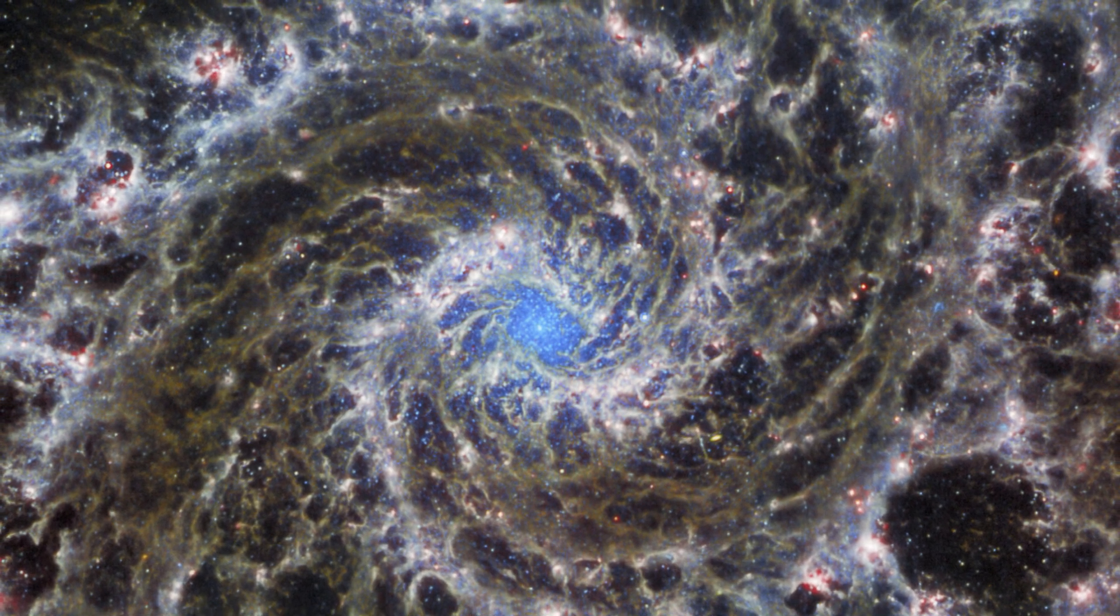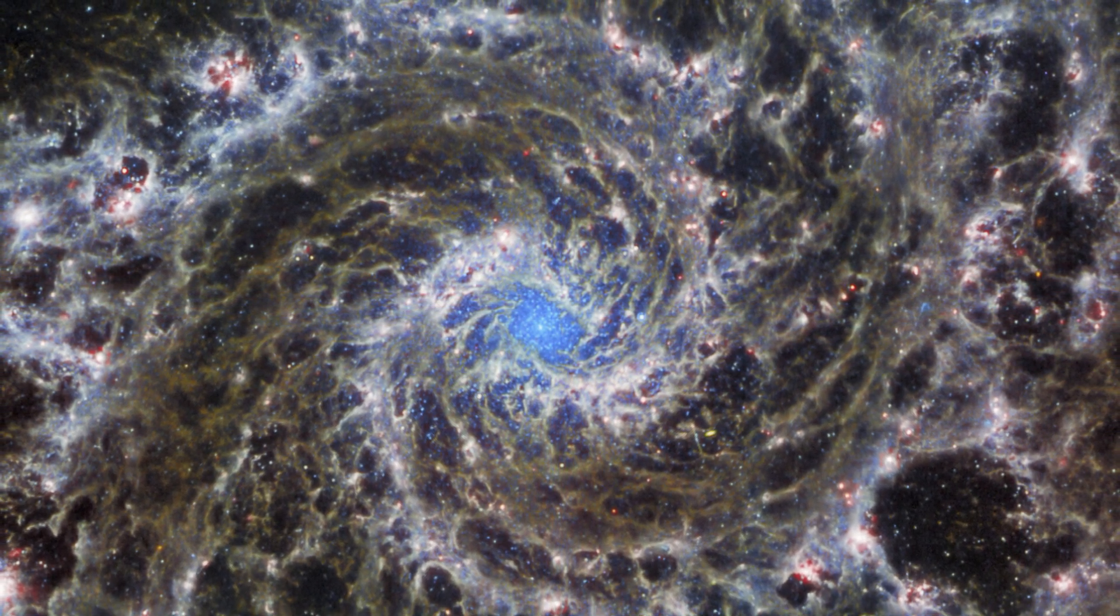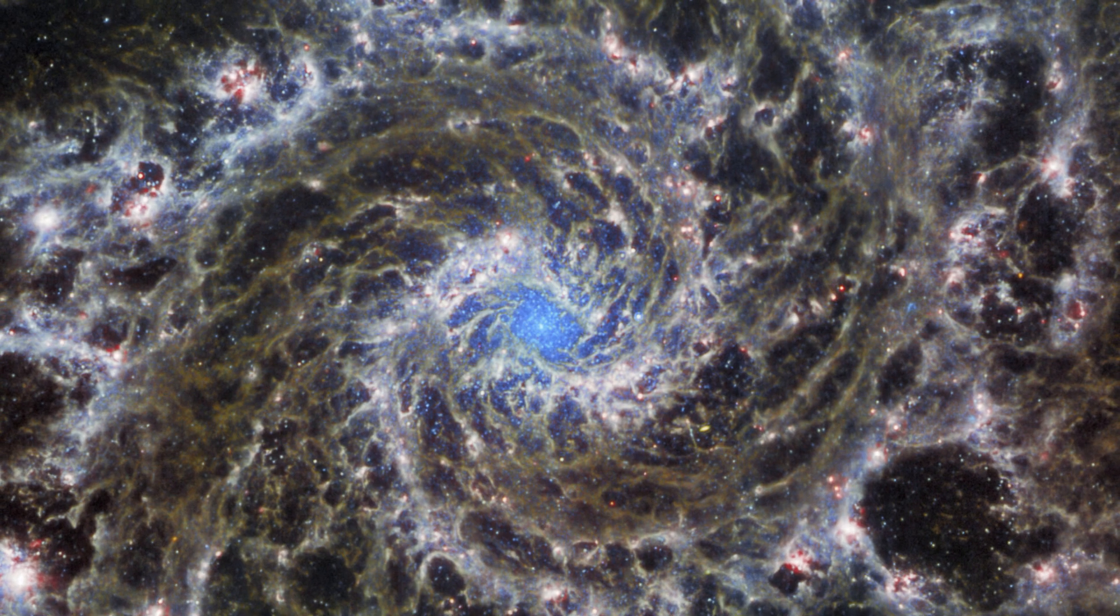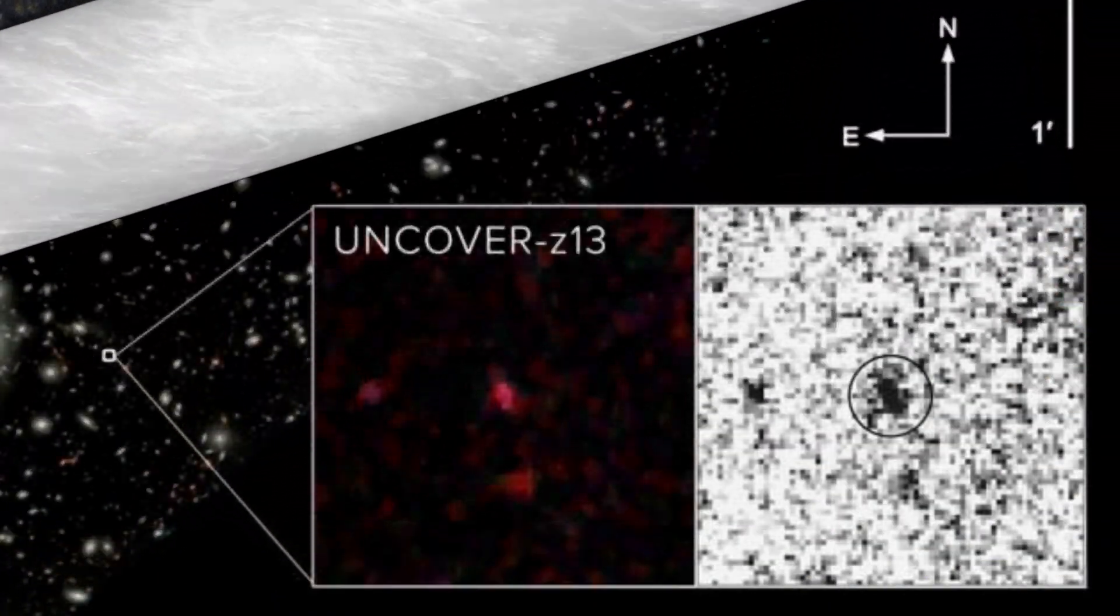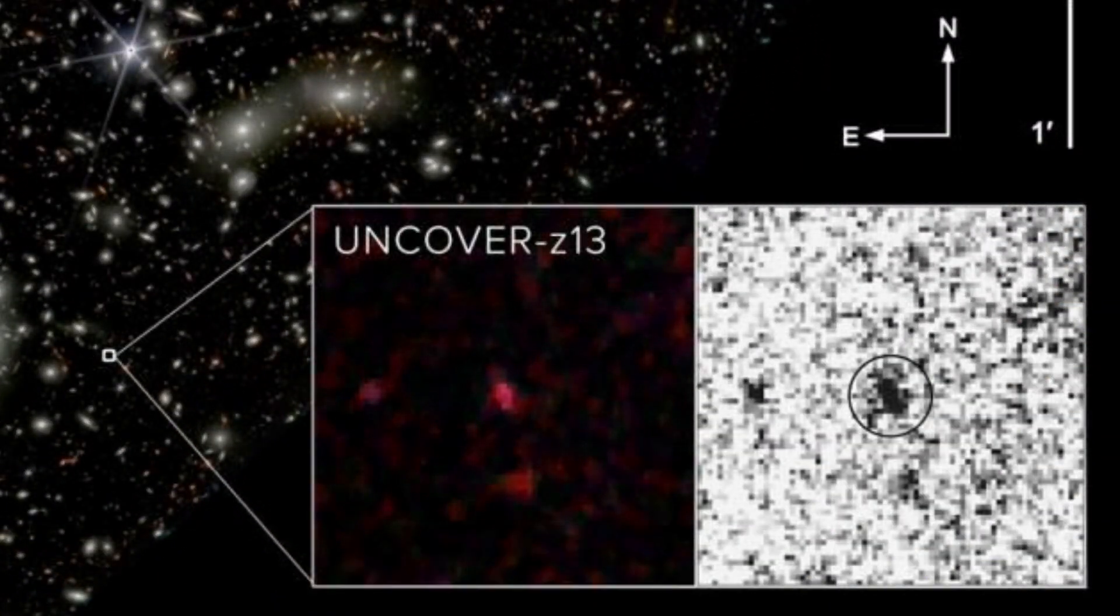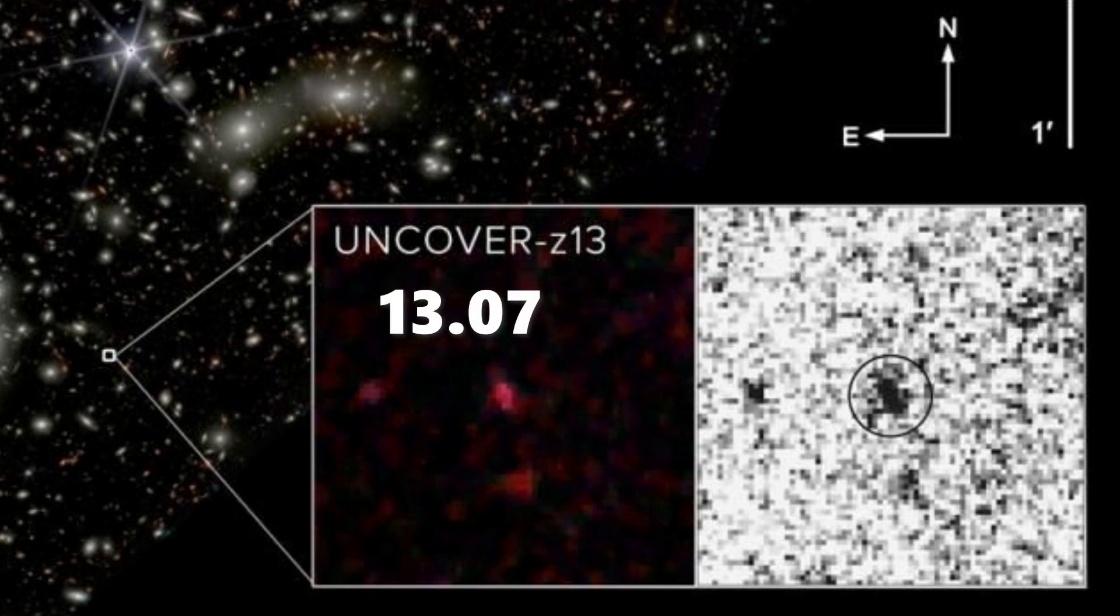Yes, the James Webb telescope has discovered two more of the most distant galaxies ever seen. The first, known as Uncover Z-13, exhibits a redshift of 13.07, confirming that we see it as it existed only 330 million years after the Big Bang.